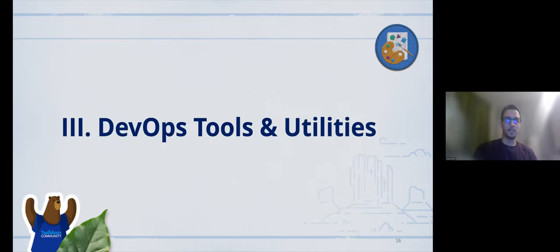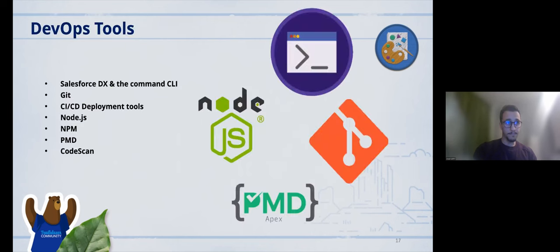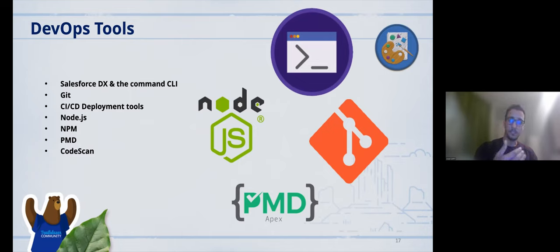Now let's move to DevOps tools and utilities. We start with Salesforce DX and the Command CLI — our main tools on this journey — helping with package creation, managing package dependencies and upgrades, automated testing via scratch orgs, and collaboration between developers via code sharing. Git is our code management tool, and CI/CD deployment tools are next on the list.